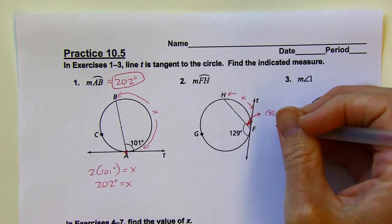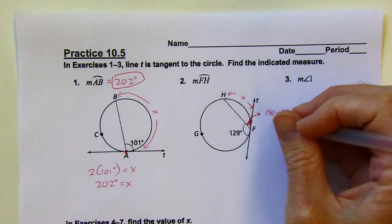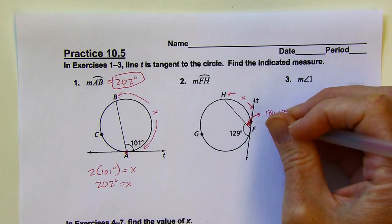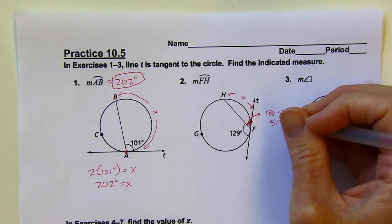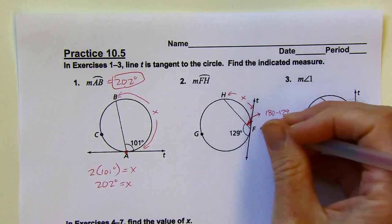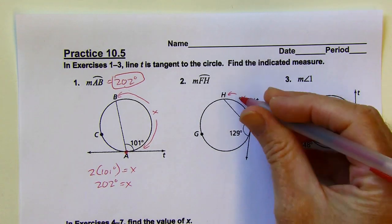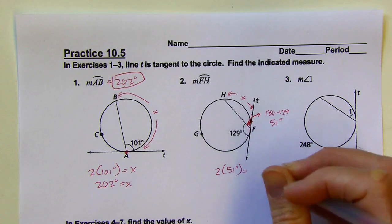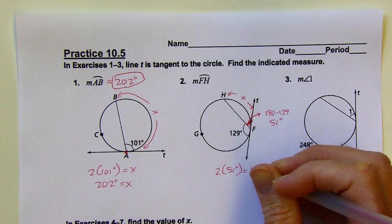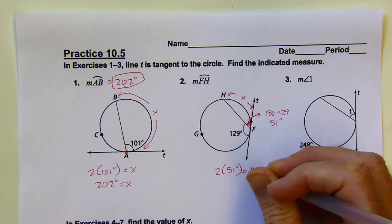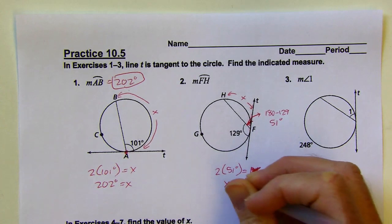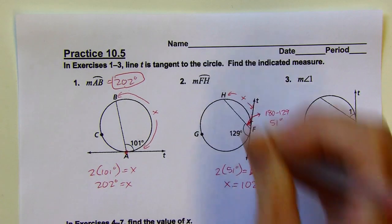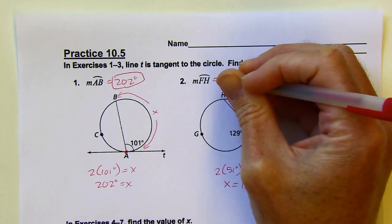So that's going to be 51 degrees. If this angle is 51 degrees, I can say 2 times 51 degrees would equal X. That is 102 degrees, and that is the measure of my arc there.